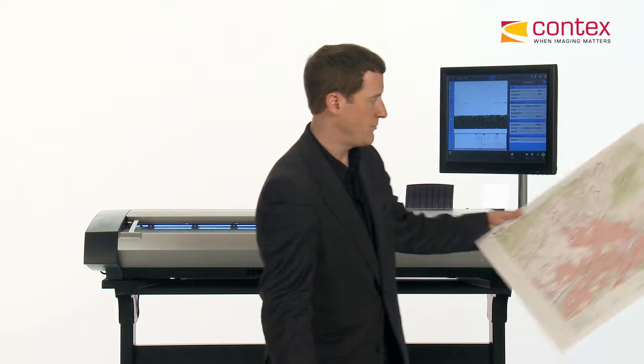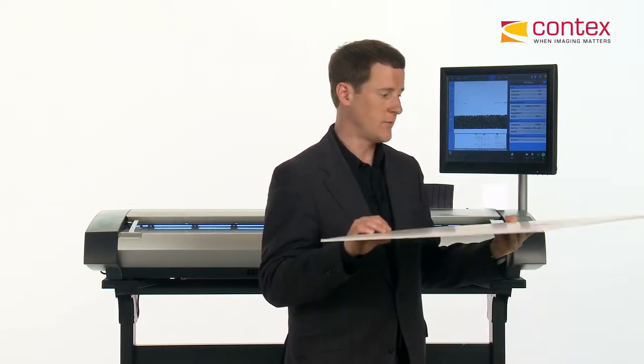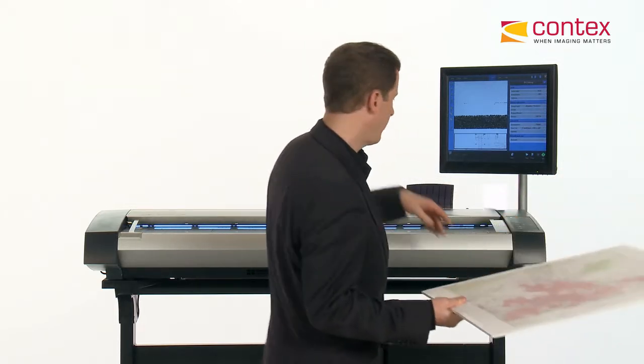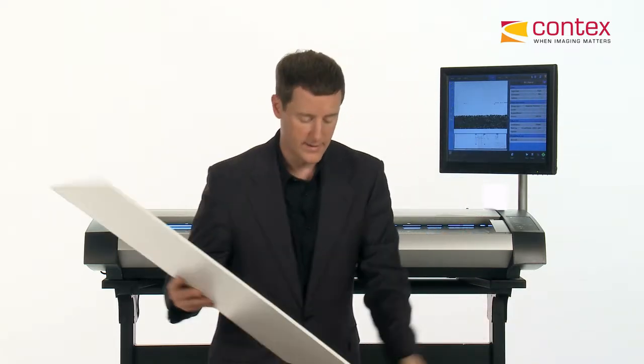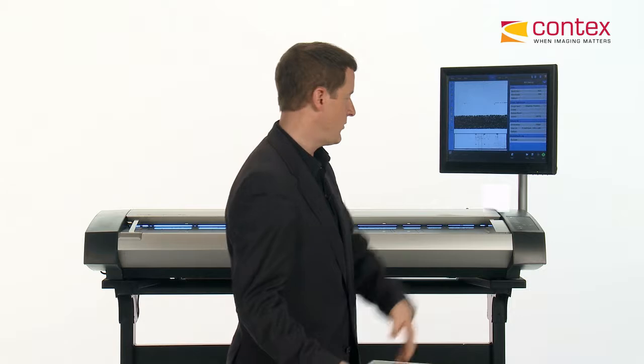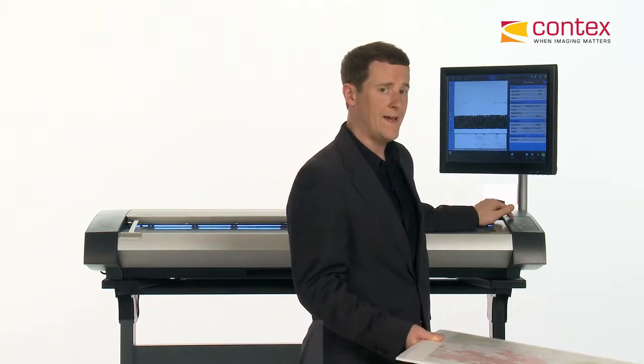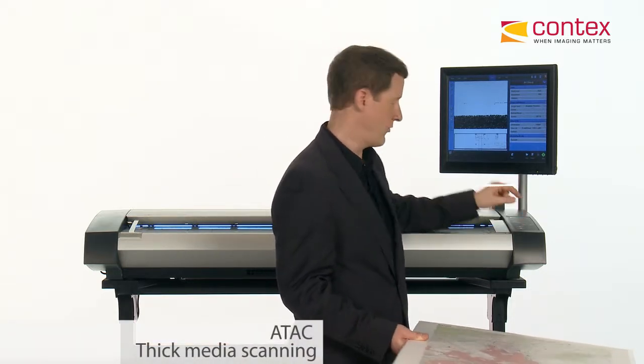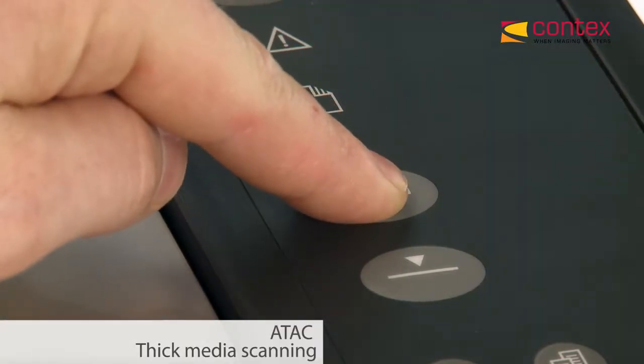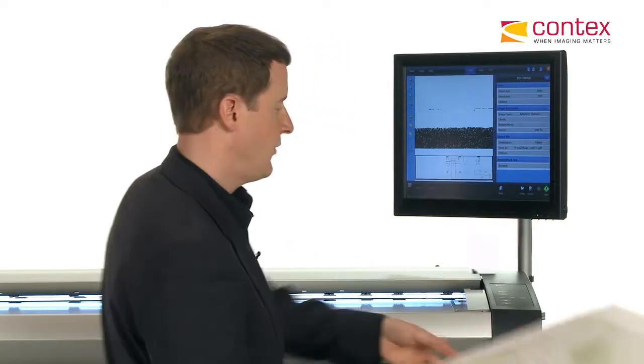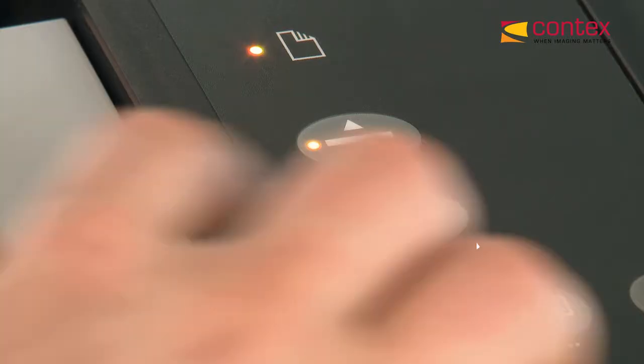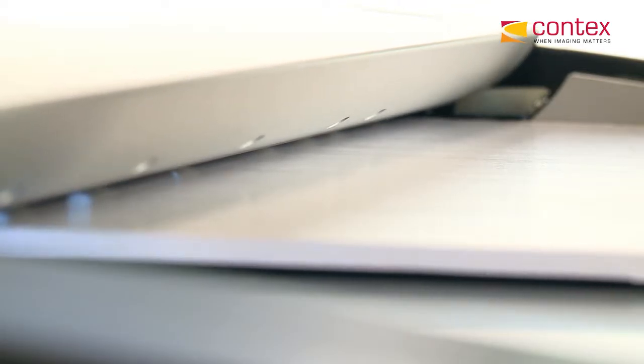Now, we're going to make it even a little bit more challenging by trying to scan this thick material on the same scanner. So first, I'll make some simple hardware adjustments by removing my paper return guides. And now I'm going to make a very simple adjustment on a unique feature we call ATAC. That stands for Automatic Thickness Adjustment Control. A simple switch on the keypad of the scanner will raise the lid to accommodate up to a one-half inch thick document.